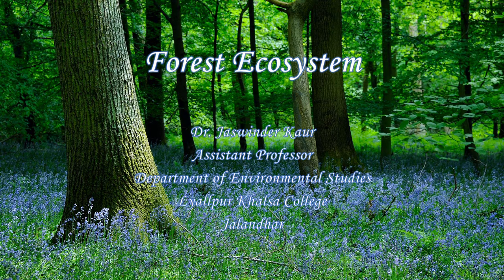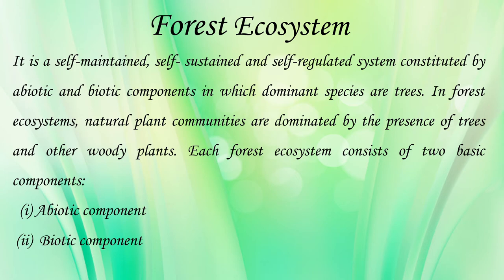Welcome students, today we are going to learn about forest ecosystem. An ecosystem is a self-maintained, self-sustained and self-regulated system made up of abiotic and biotic components. A forest ecosystem is a self-maintained, self-sustained and self-regulated system made up of abiotic and biotic components in which the dominant species are trees, so we also call a forest ecosystem a jungle.